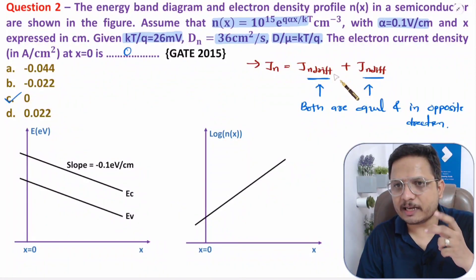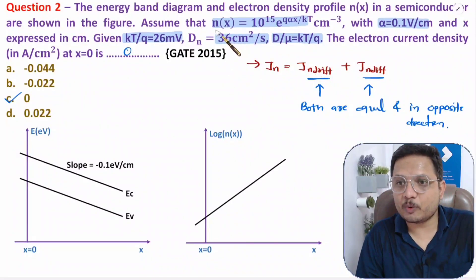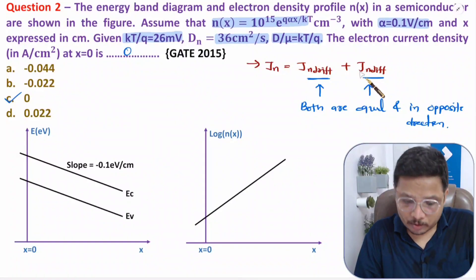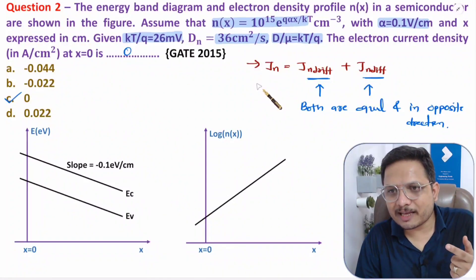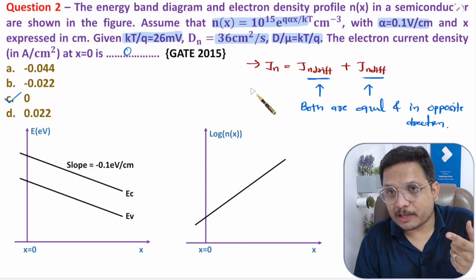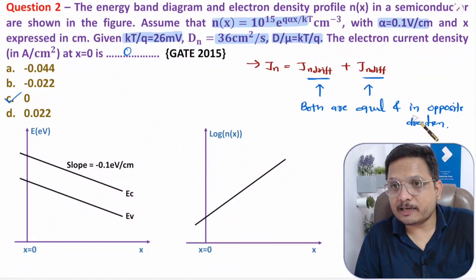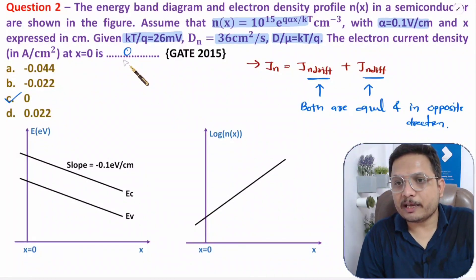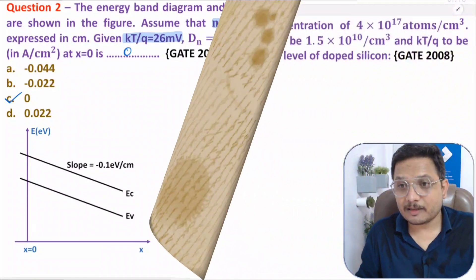Since both are equal and in opposite directions, the resultant electron current density Jn is zero. So your answer is zero — you don't need to substitute all the given values and derive everything. If this were a university exam question, you would place values of drift and diffusion current, differentiate n(x) with respect to x, and substitute all data, and you would still observe Jn = 0. But by understanding fundamentals, you can arrive at zero directly.